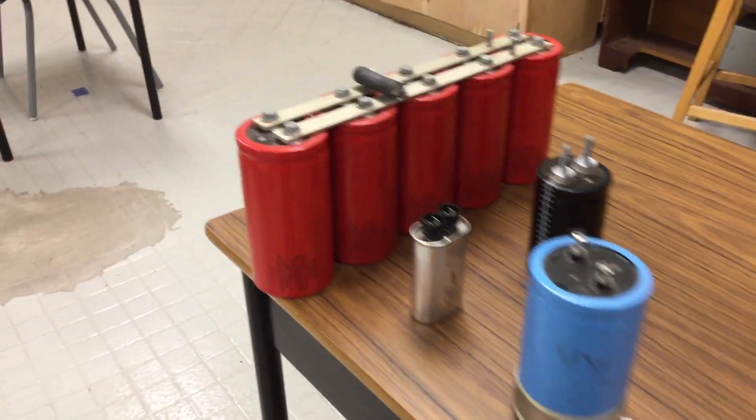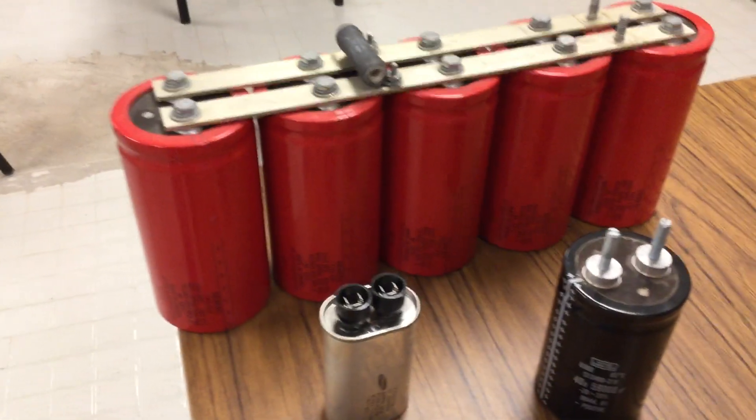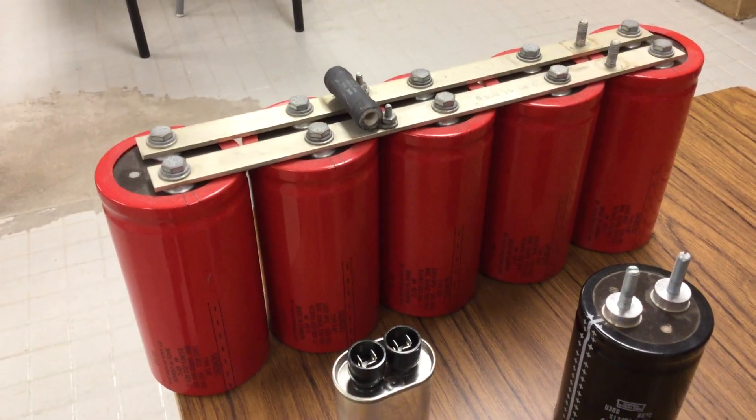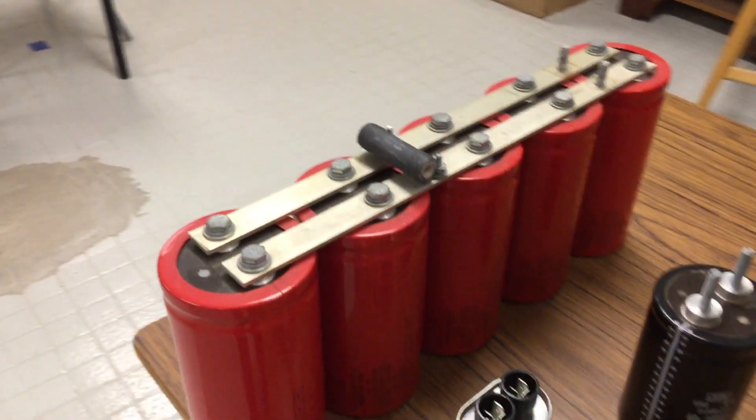Now capacitors can take all kinds of different shapes. This big bad bank of capacitors here came out of a little wind turbine, part of the power factor correction, smoothing out the waves, taking care of all the harmonics and all that silliness.